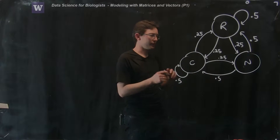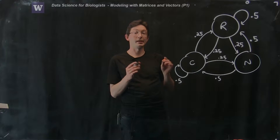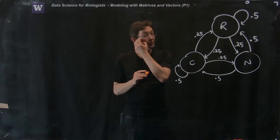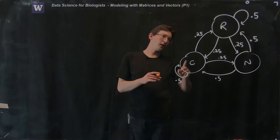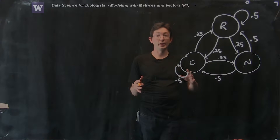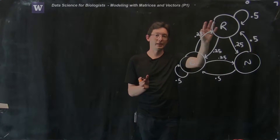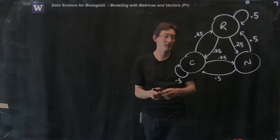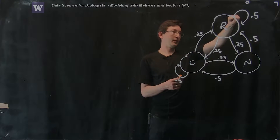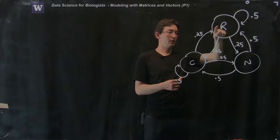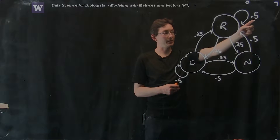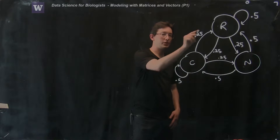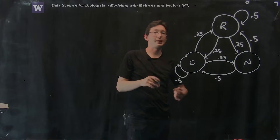I just made up all of these numbers and categories — this is just a made-up example. You could add more types of weather or change these numbers. One feature you'll notice about this system is that the total probability of something happening tomorrow given a state today is always equal to 1. If I'm rainy today, the probability of it being rainy, cloudy, or nice tomorrow adds up to 50% + 25% + 25% = 100%.